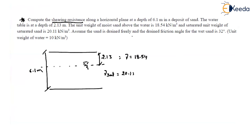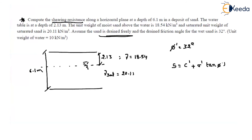The sand drains freely, so we use effective parameters. The drained friction angle φ' is given as 32 degrees. Shearing resistance S = c' + σn' tan φ'. For sandy soil, c' = 0, so S = σn' × tan φ'. We need to find the effective normal stress σn' at 6.1 m depth.